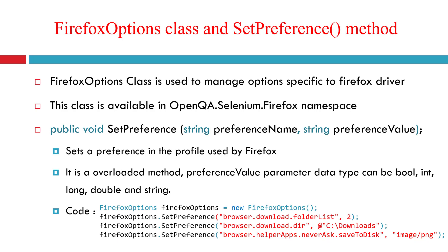The Firefox options class is used to manage options specific to the Firefox driver. It is available in the OpenQA.Selenium.Firefox namespace. The method we'll use is SetPreference, which is an overloaded method taking five different types for the second parameter: bool, int, long, double, and string. The first parameter remains a string. We set preferences like browser.download.folderList, browser.download.dir, and browser.helperApps.neverAsk.saveToDisk.